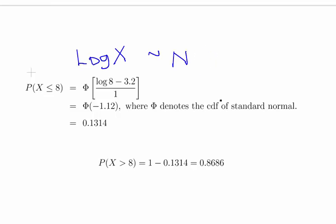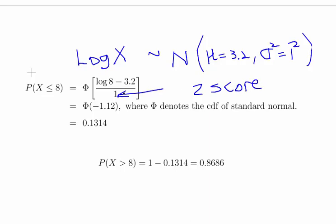Ok? With mean, oops, mean of 3.2 and sigma squared equals 1 squared. Ok? 1 squared just to emphasize that that is sigma standard deviation. So, essentially this is a z-score calculation or a z-score. Ok? Log of 8 minus 3.2 divided by 1. That should give us minus 1.12. And this is where we get the phi function of that.